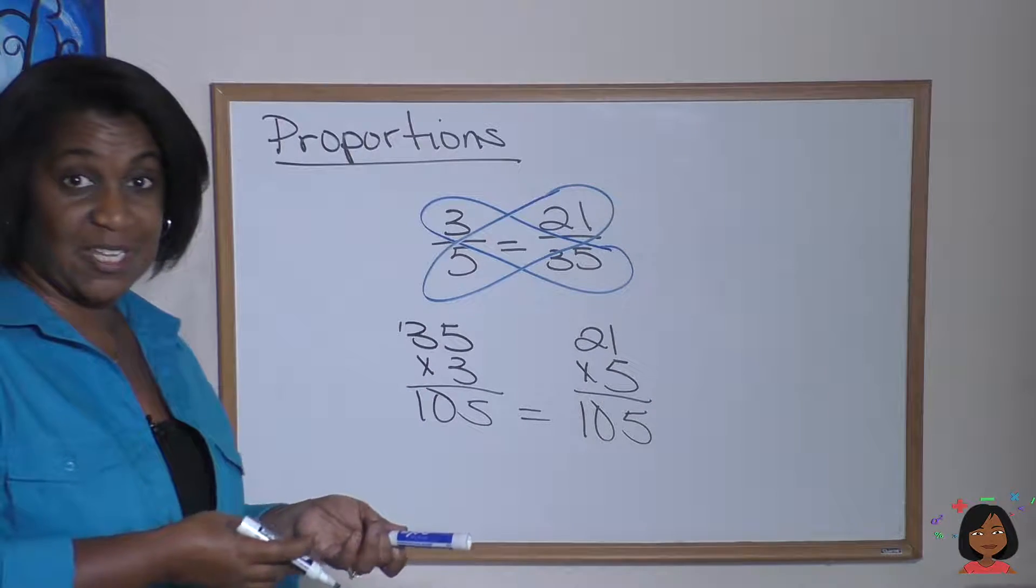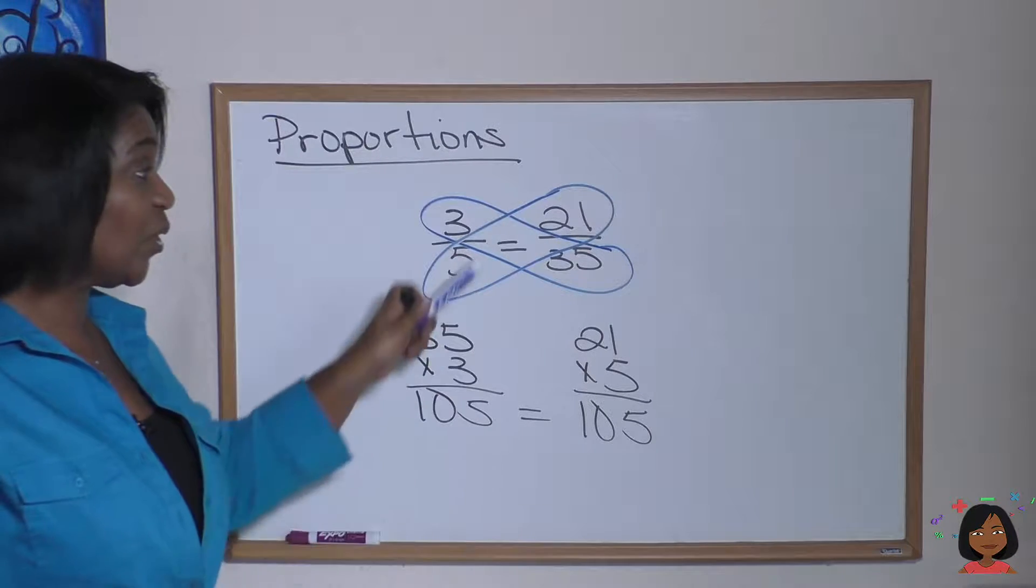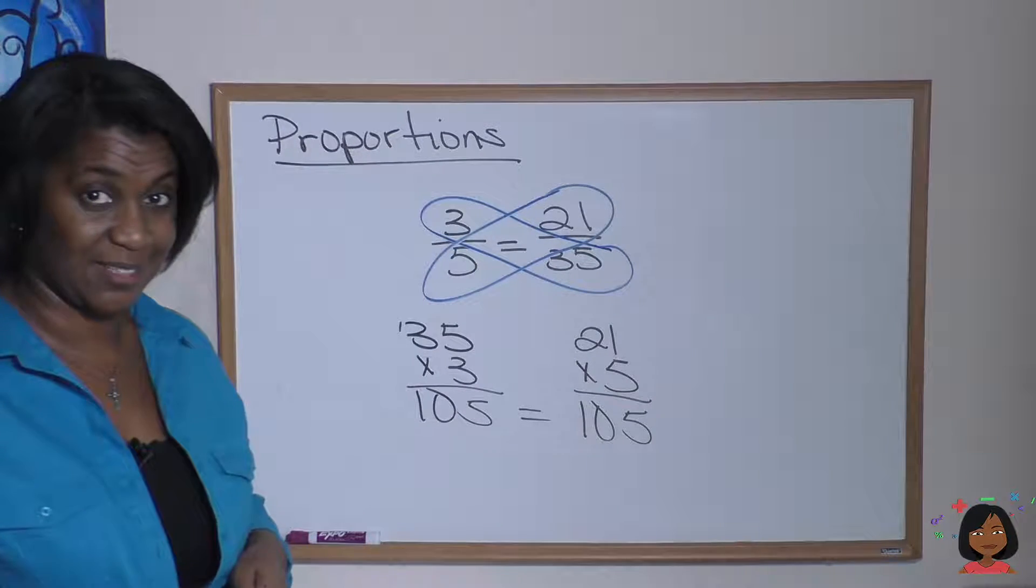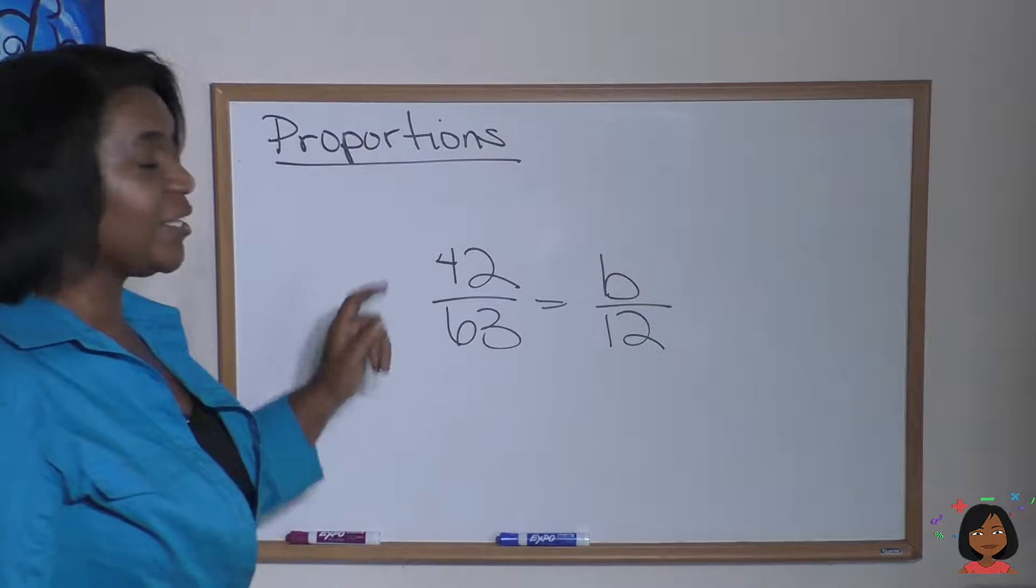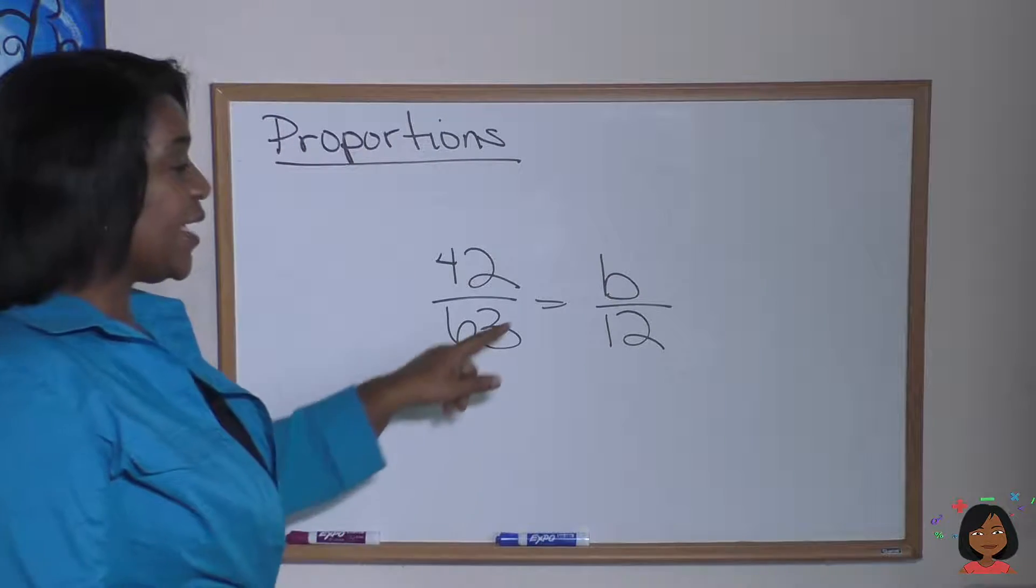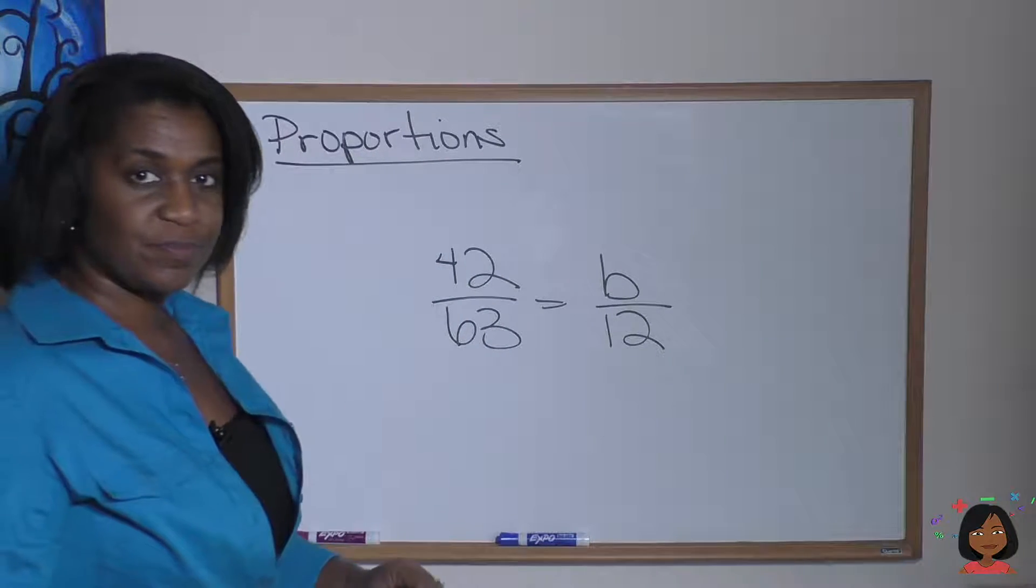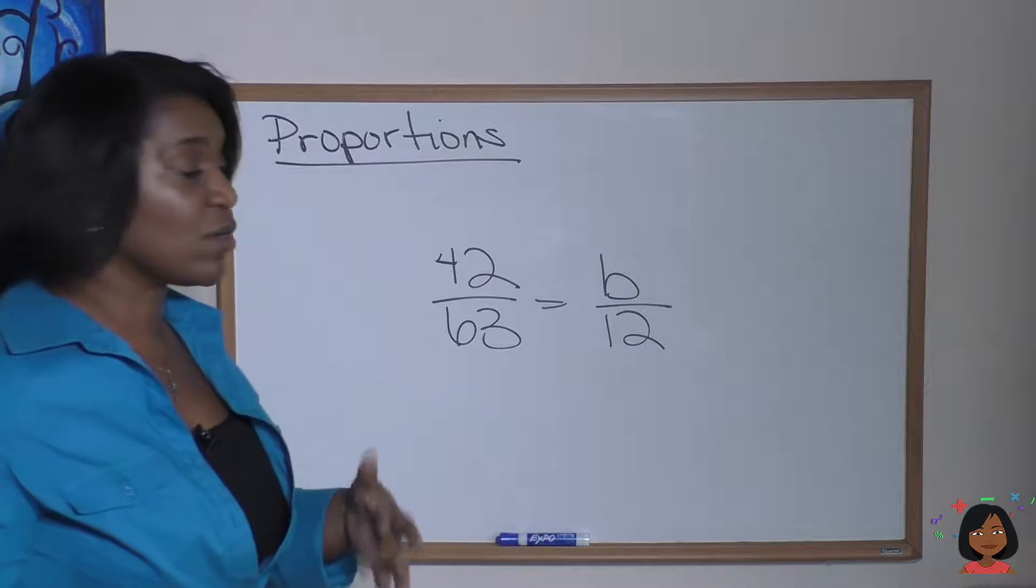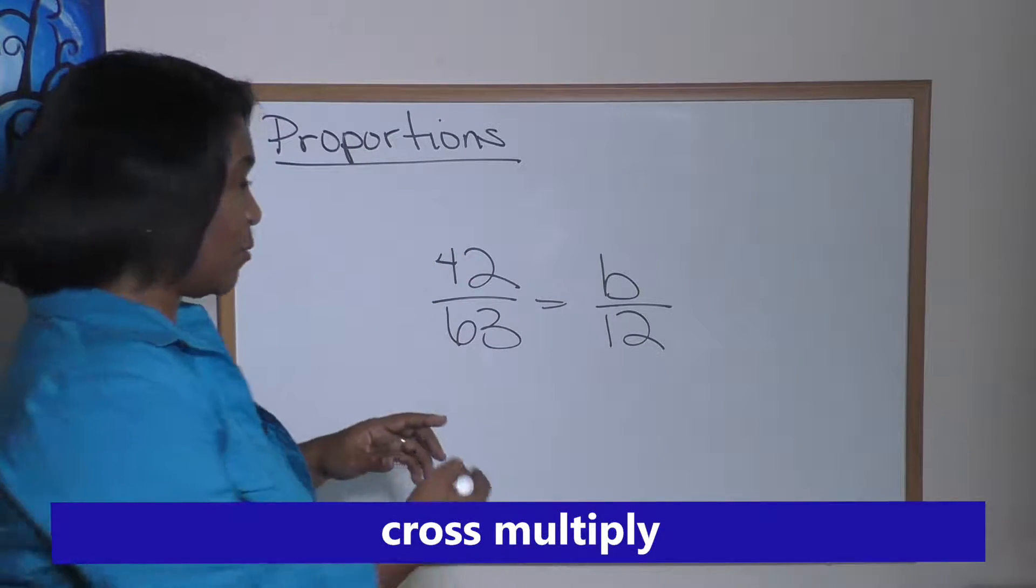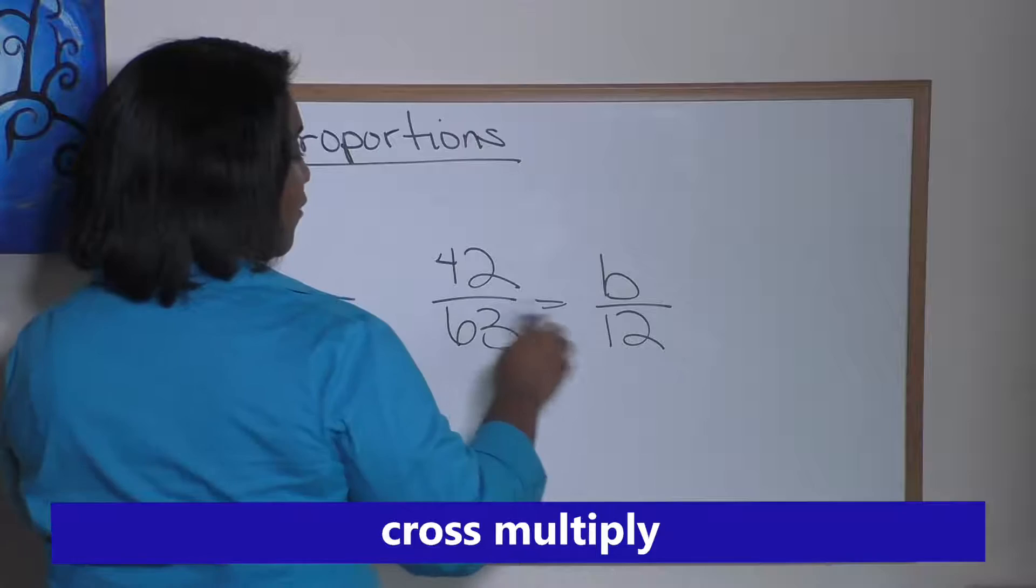Now, I'm actually going to give you some problems of proportions where one of these numbers is missing. Take a look at this problem. We have 42 over 63 equals b over 12. How do we find it? Well, when we're talking about proportions, remember, we're going to cross multiply. So let's draw it out first.